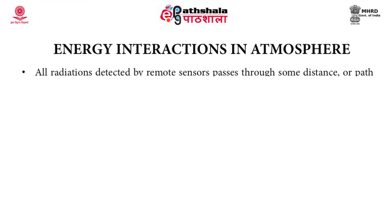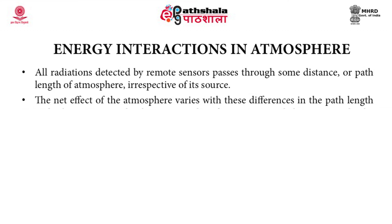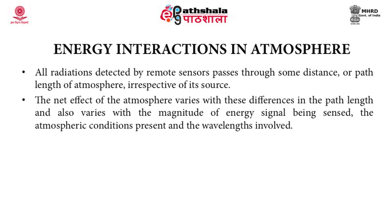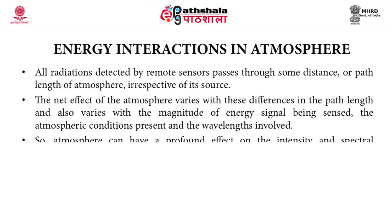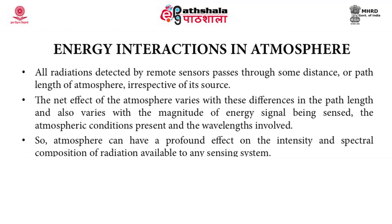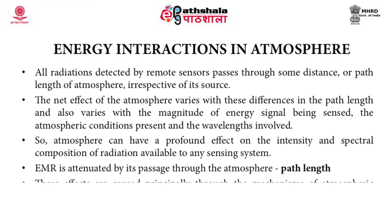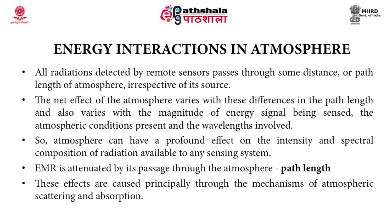The second step is energy interactions in the atmosphere. All radiations detected by remote sensors pass through some distance or path length of the atmosphere, irrespective of their source. The net effect of the atmosphere varies with differences in path length, the magnitude of the energy signal being sensed, the atmospheric conditions present, and the wavelengths involved. The atmosphere can have a profound effect on the intensity and spectral composition of radiation available to any sensing system. These electromagnetic radiations, while passing through the atmosphere, are attenuated, principally through the mechanisms of atmospheric scattering and absorption.